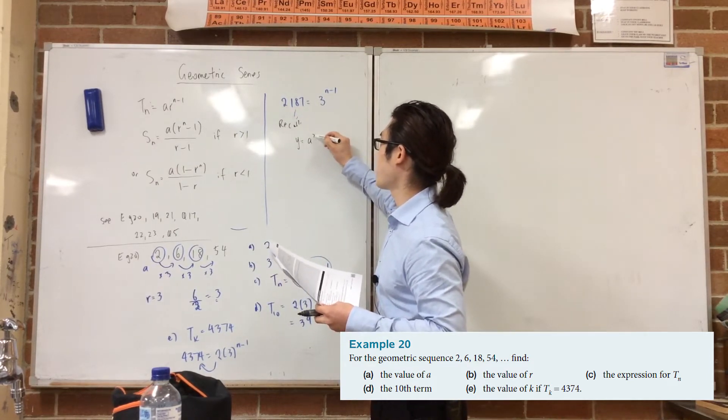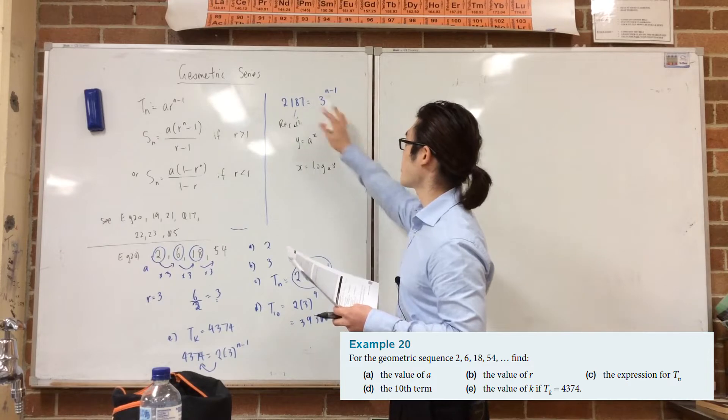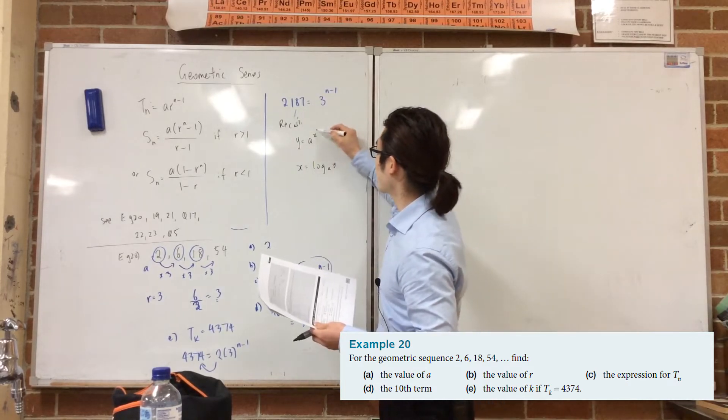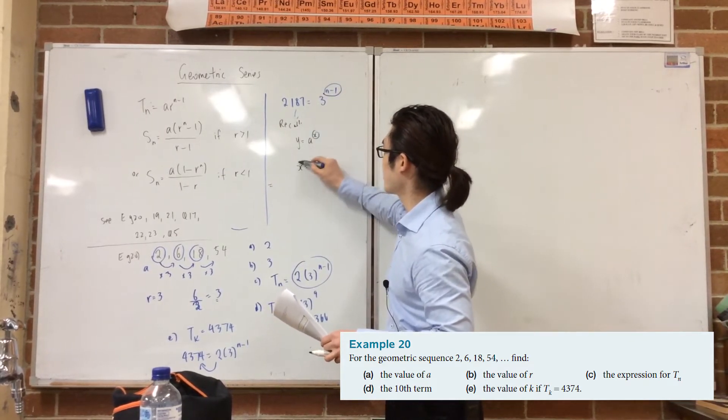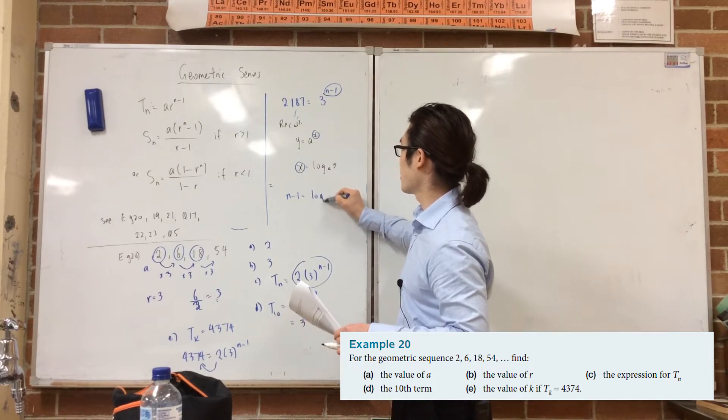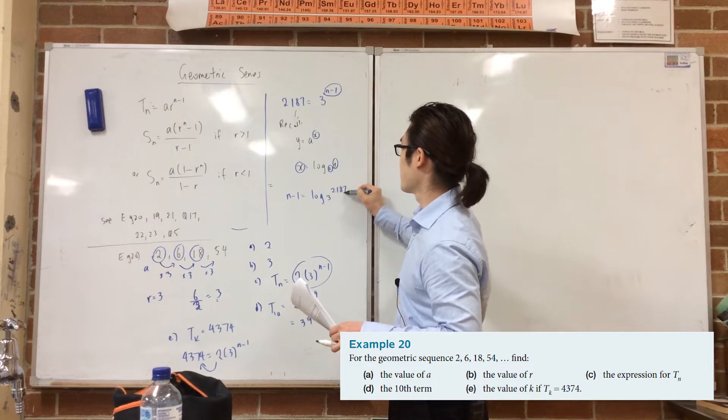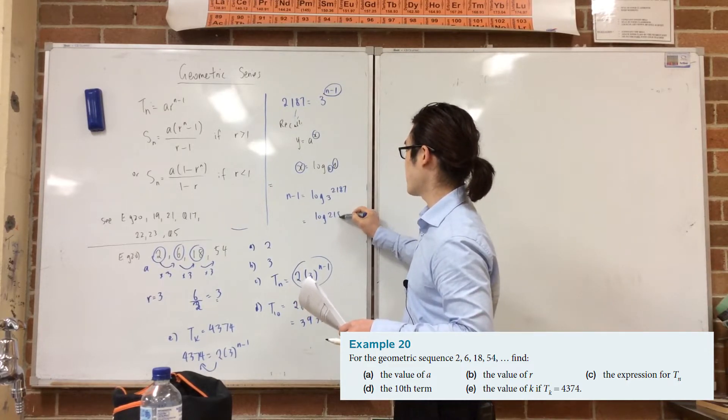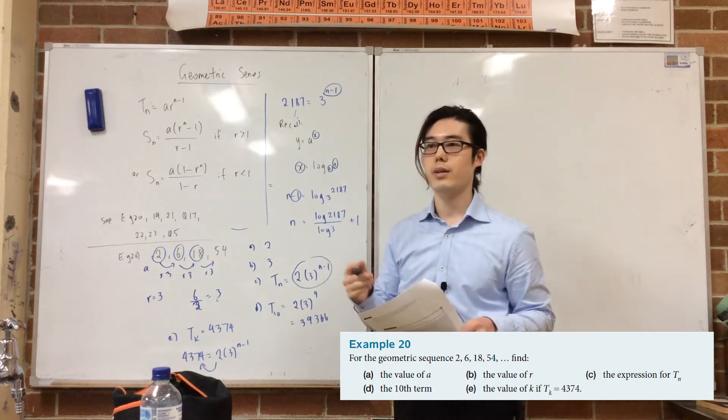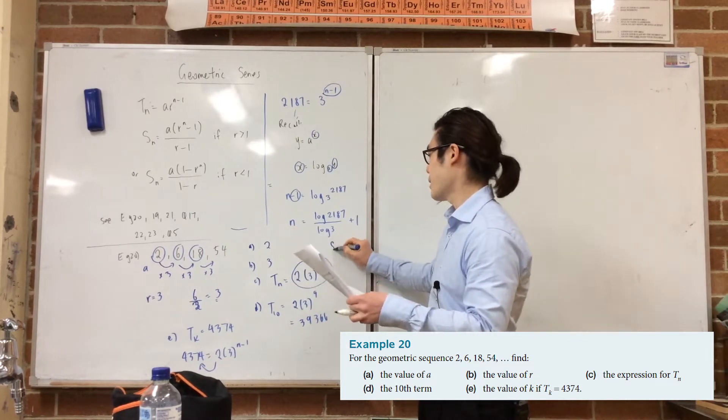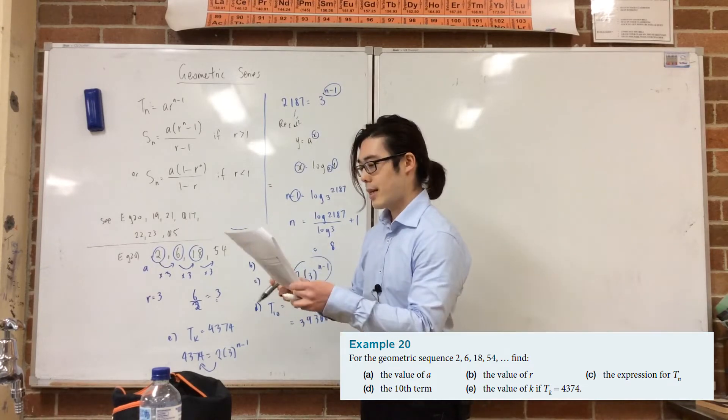Now, you can use trial and error to figure this out. But I'd rather you guys know the proper method. So in order to properly do that, just recall, if you've got y equals a to the power of x. Log a y. So that's the same concept here. So in this case, how would you write, so the n minus one, log 3, 2187. n minus one equals to log, my a is a three. Log 2,187 over log three. And then if I want to find n, make sure it's plus one at the end because it comes with n minus one. If you put all of this in the calculator, you'll get eight. Does that make sense?